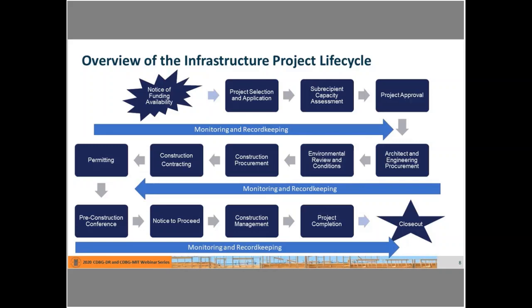Once the project has been approved, typically they'll move to procuring or selecting services for developing the architect and engineering scope of work and specs for the project. From there, the environmental review can happen once the project scope of work is defined — a critical step that must happen before moving to construction or obligating any funds. Once the environmental review is done, they will typically move to construction procurement, contracting, permitting, a pre-construction conference, a notice to proceed, then construction management and project completion, all leading to closeout.